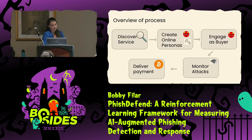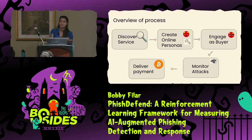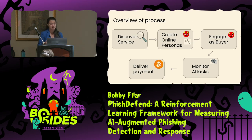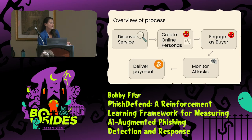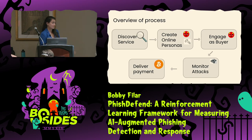This entire study was done with Gmail because we were collaborating with folks on the anti-abuse team at Google, but the results can generalize pretty well. The way the process worked: we discovered services that purported to break into Gmail accounts, then created online personas as the buyer and victim in order to engage with them. We engaged with each service as the buyer persona, saying we want to hire you for this victim — both buyer and victim completely fake. We then monitored the attacks from a variety of different vantage points, and if they were successful, we delivered payment because they did what they said they were going to do. So some people made money out of this study.